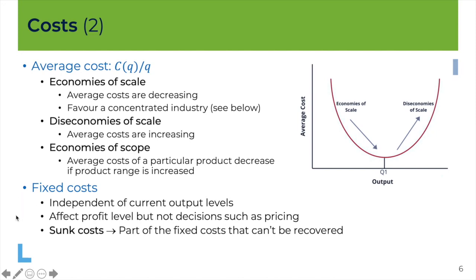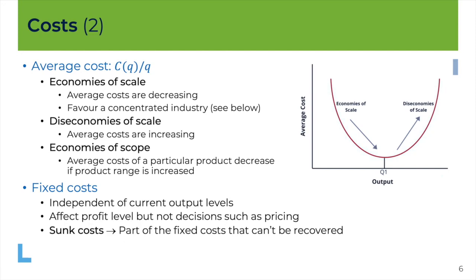The last concept is fixed costs. Fixed costs are independent of the current output levels — typically you pay them even before producing. They affect the profit level of course, but they don't affect your decisions; decisions depend on the marginal cost. You don't look behind when you make a decision — the fixed costs are gone, they are bygones. The sunk cost is the part of the fixed cost which you will never recover. Even if you stop your activity and sell your stock or machines, you will receive a lower value than what you paid to acquire these assets in the first place. The difference is what we call the sunk cost — the part of the fixed cost that you cannot recover.